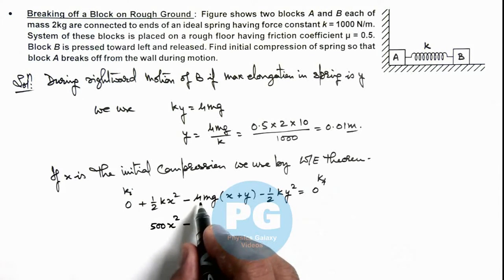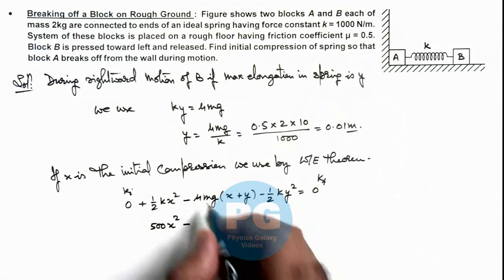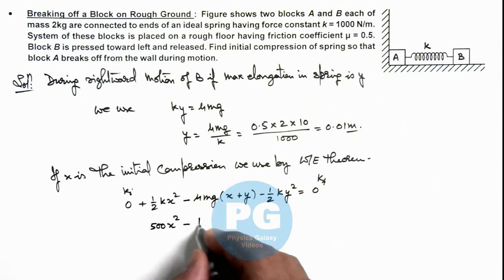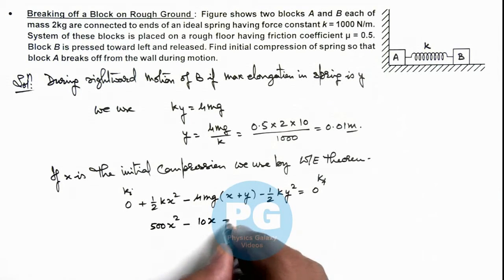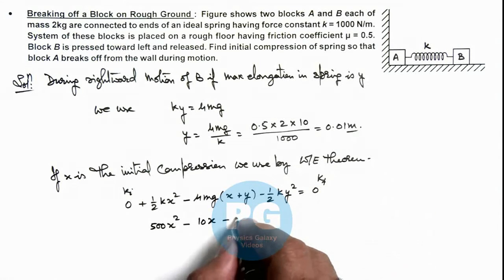Minus the value of μ we can take as 0.5, mass is 2, g is 10, so here the value will be 10 times x minus the value of y is 0.01 meter, so it is 0.1.